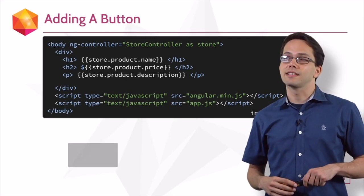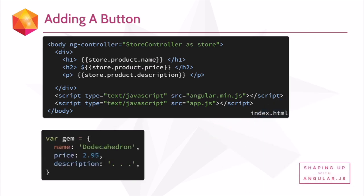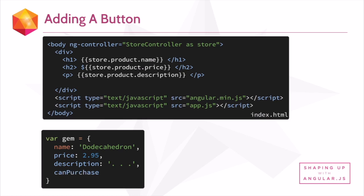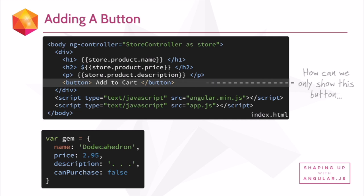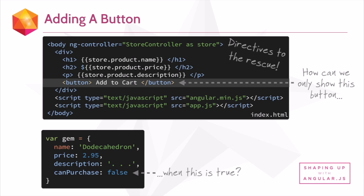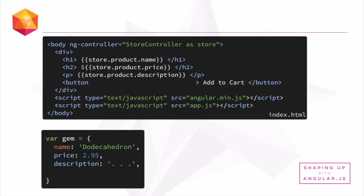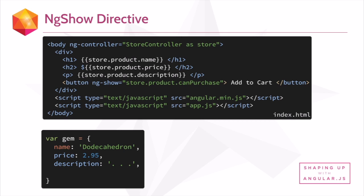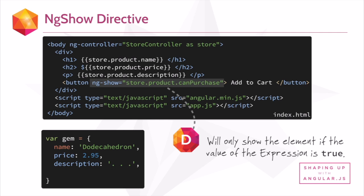Here you can see we're inside of our index.html and we have our gem data. Let's add a new key and value to our gem called canPurchase. We'll set it to false because we can't purchase this gem. Then inside of our index.html there's a button called 'add to cart' and we only want that to show up when canPurchase is true. We'll use the ngShow directive and specify an expression: store.product.canPurchase. This directive is telling our button to only show if the value of its expression is true. In our case it's false, so that button element won't show up on the page.